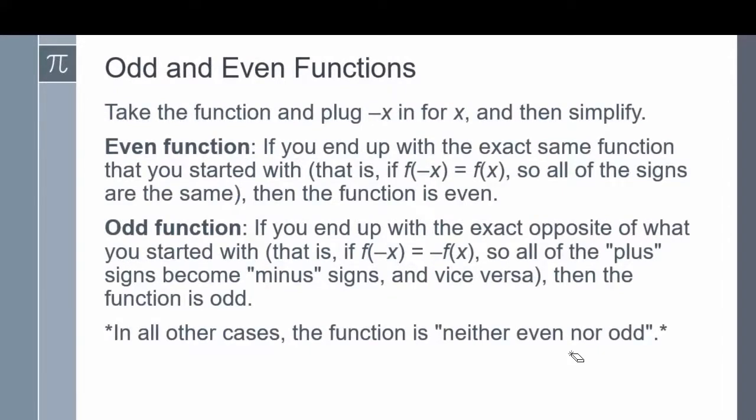Odd and even functions. When looking at functions, we can classify them as either odd, even, or neither. To do this, we take the function, plug in negative x for x, and simplify. It is an even function if you end up with the same function you started with — all the signs are the same. It is an odd function if you end up with the exact opposite — all the signs have flipped. If you don't get either result, then it is neither even nor odd.